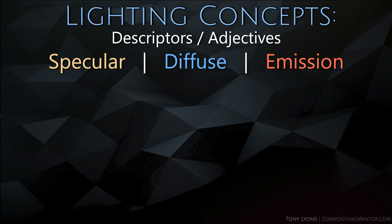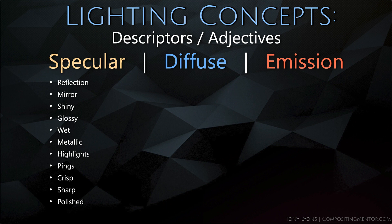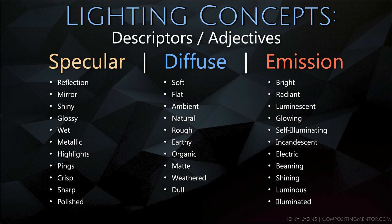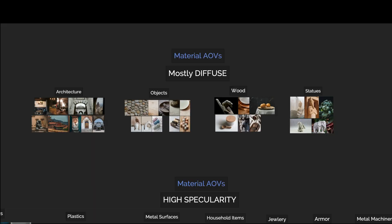Let's start with some basic adjectives describing each category. Specular: reflection, mirror, shiny, glossy, wet, metallic, highlights, pings, crisp, sharp, polished. Diffuse: soft, flat, ambient, natural, rough, earthy, organic, matte, weathered, dull. You can already see the contrast between specular and diffuse. Emission: bright, radiant, luminescent, glowing, self-illuminating, incandescent, electric, beaming, shining, luminous, and illuminated.